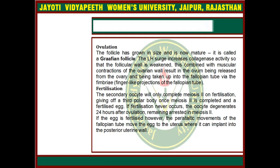In the fertilization process, the secondary oocyte will only complete meiosis 2 upon fertilization, giving off a third polar body once meiosis 2 is completed, resulting in a fertilized egg. If fertilization does not occur, the oocyte degenerates 24 hours after ovulation, remaining arrested in meiosis 2. If the egg is fertilized, the peristaltic movement of the fallopian tube moves the egg to the uterus where it can implant.